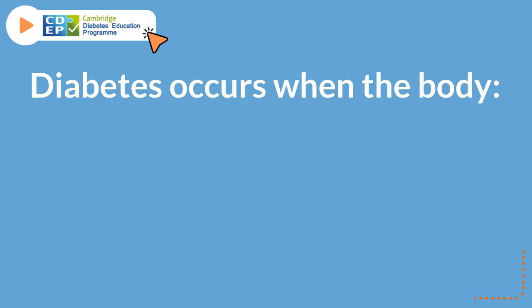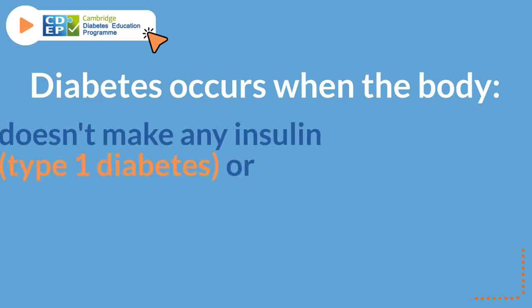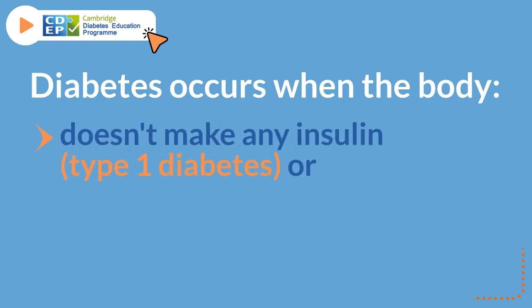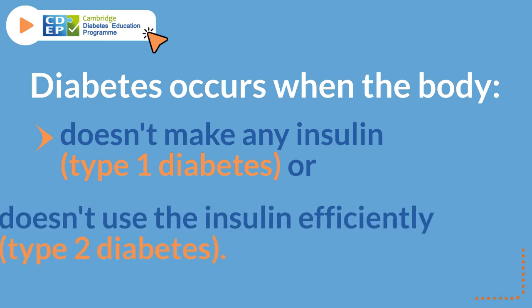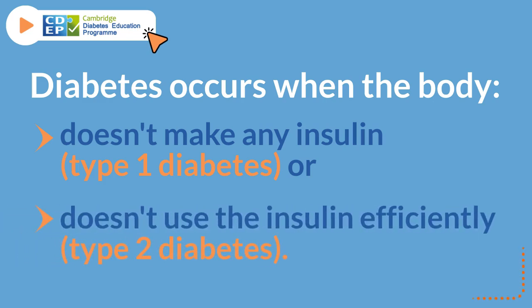Diabetes occurs when the body doesn't make any insulin, like in type 1 diabetes, or doesn't use the insulin efficiently, like in type 2 diabetes.